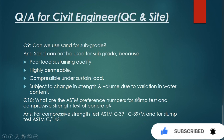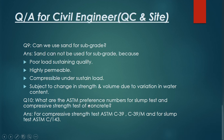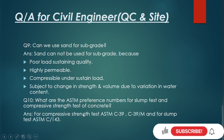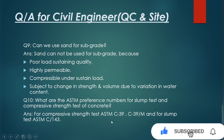The last question, question number ten: what are the ASTM reference numbers for slump test and compressive strength test of concrete? For compressive strength test: ASTM C39 or C39/M. For slump test: the reference number is ASTM C143.